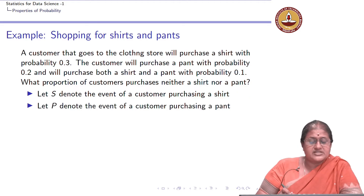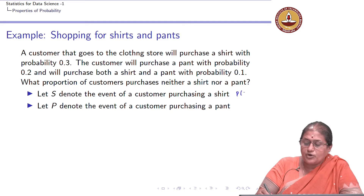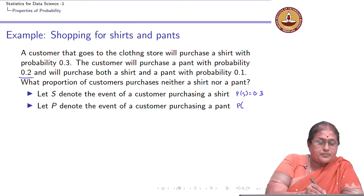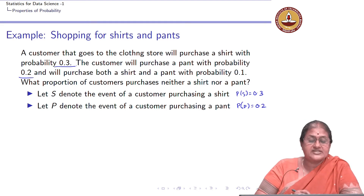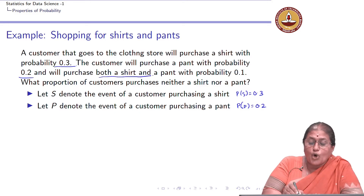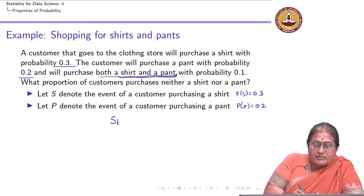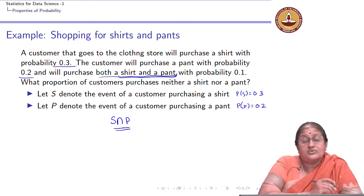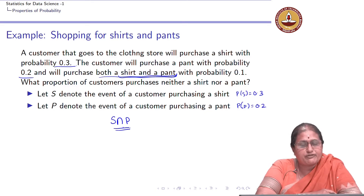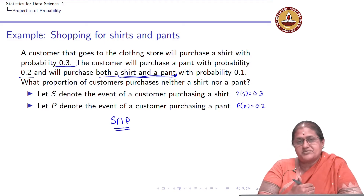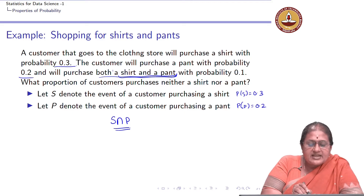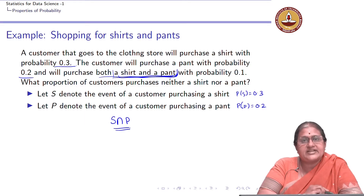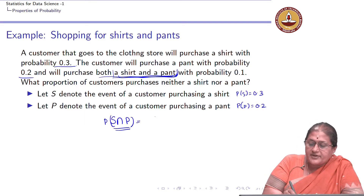Similarly, the next event is the event of a customer purchasing a pant. The probability of P is 0.2. Some other information given is the probability that a customer would purchase both a shirt and a pant. This can be captured by S intersection P, which is the event that both a shirt and a pant are being purchased, and that probability is given to be 0.1.